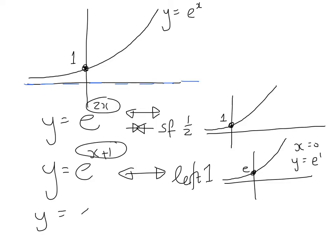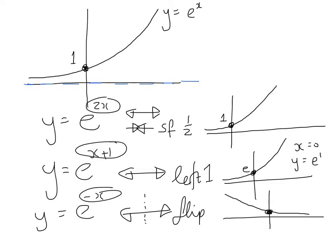What else could we do? y equals e to the minus x. That's still inside, left and right, and it's going to be a flip over the y-axis. So, it's going to come down like this, and this will be the point 1.